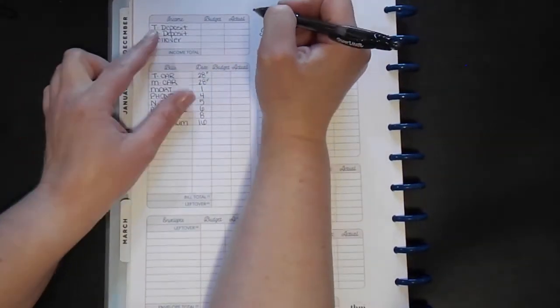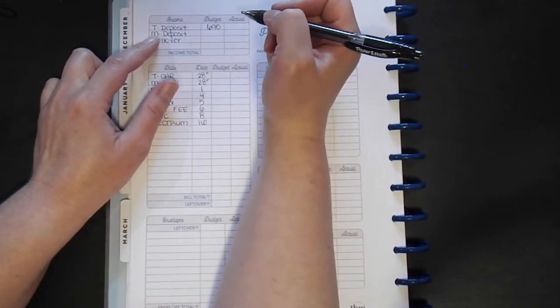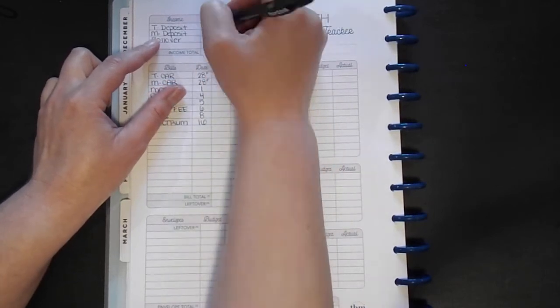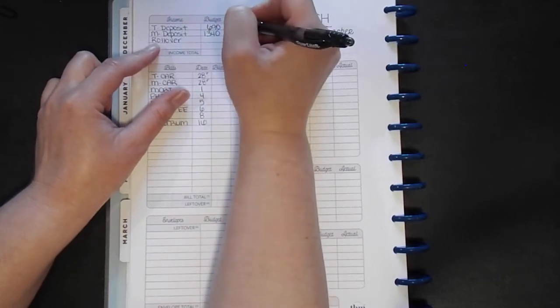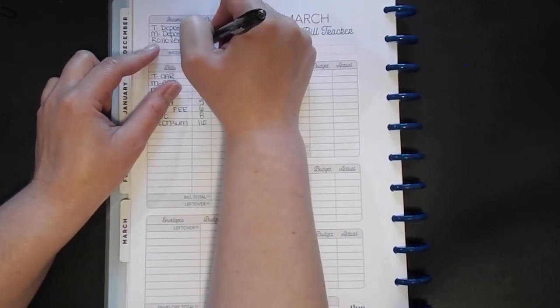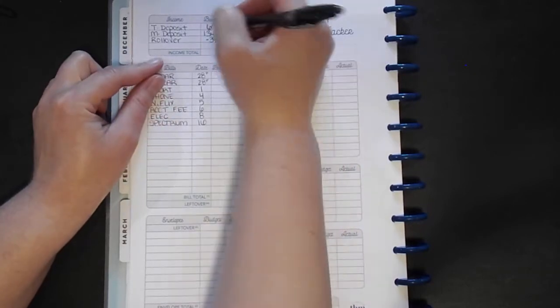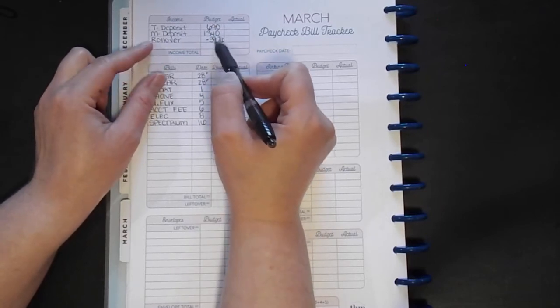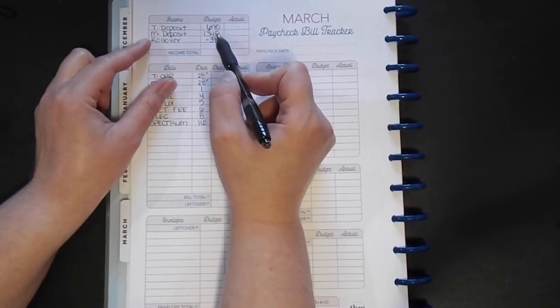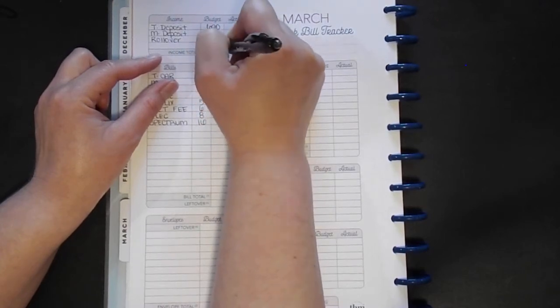So for my husband's deposit, he did $690. He gets paid on the 1st and the 15th, and I get paid on the last day of the month. I made a deposit of $1,340 and our rollover was negative at $39.76. How that happened was we have a savings account and we moved that money over, but I want to take it out of what we have here so we can put that money back into our savings. So our total income is $1,990.24.